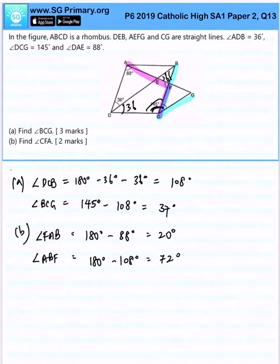After which I will find angle AFB, which is simply 180 degrees minus 80 degrees minus 20 minus 72, giving us 88 degrees.